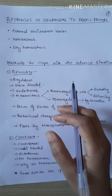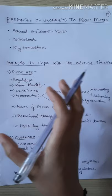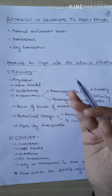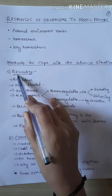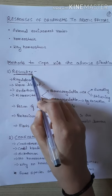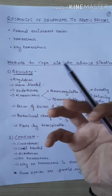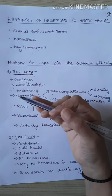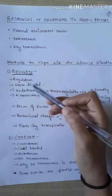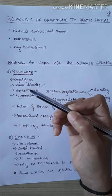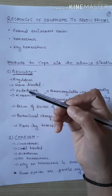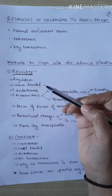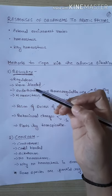Ab dekhte hain ki organisms jab bhi abiotic factors mein changes aate hain aur unke liye condition adverse hoti hai, kis tarah se usse cope karte hain. Pehla method hai — regulate. Regulate ka matlab hota hai control karna, apne hisaab se adjust karna. Is heading ke under aate hain aise organisms jo apne internal environment ko control kar sakein, maintain kar sakein. Ye sare organisms regulators kehlaate hain, because they can regulate their own internal environmental conditions.